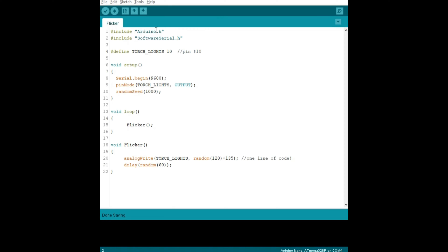At the top you'll see we have two includes, Arduino and the software serial. Then we defined one pin torch lights, pin 10 on the Arduino. We're going to be using the Arduino Nano. In the setup we do the basic serial so we can talk to it, and then this is where we set the output to torch lights. Pin 10 is going to be an output, and then the last step we need to do is the random seed.